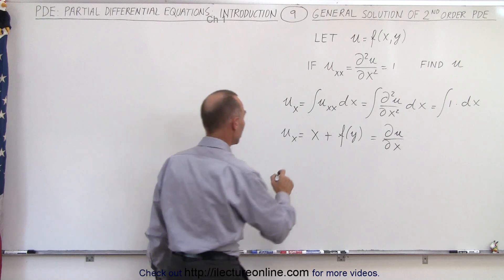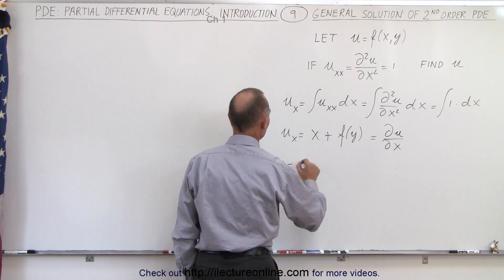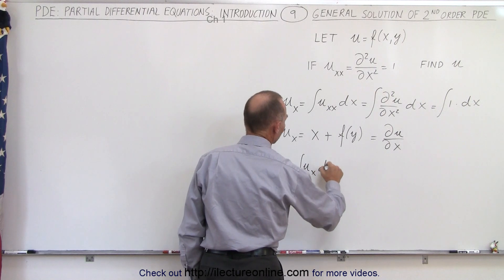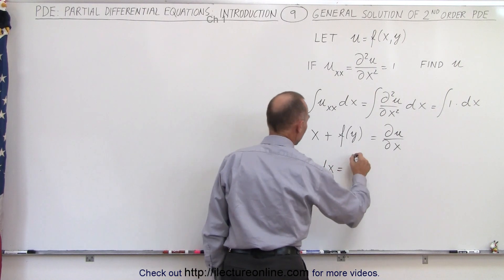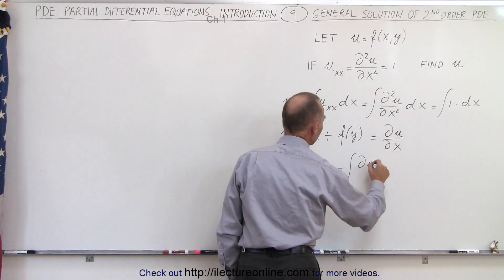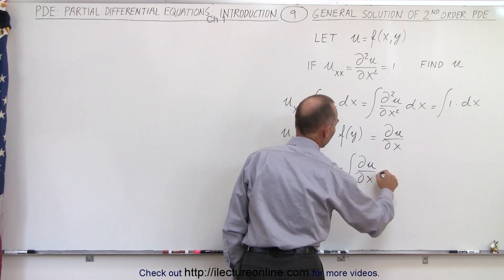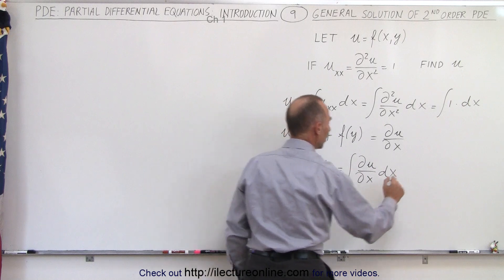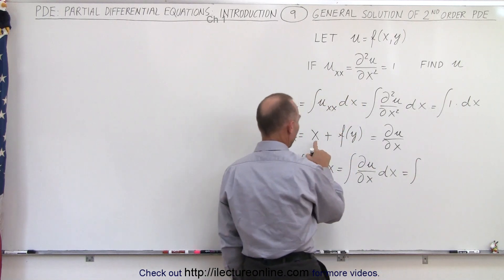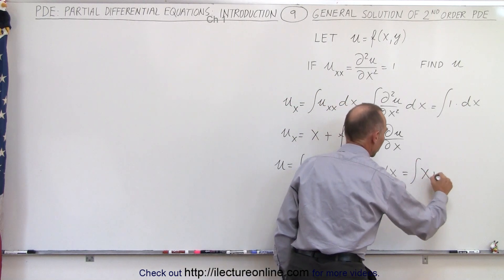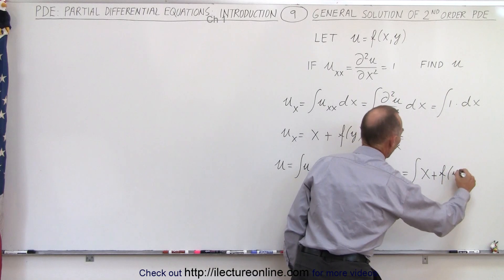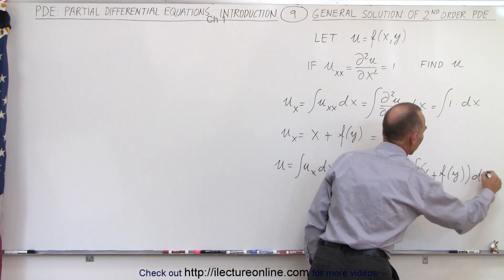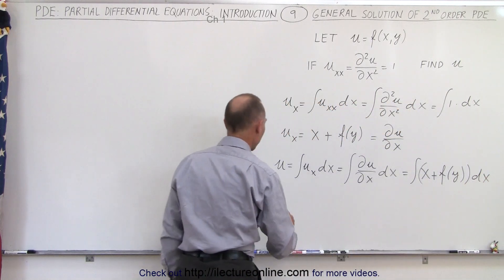Now we have to integrate one more time. u is equal to the integral of u sub x times dx, which is the integral of the partial derivative of u with respect to x dx. The partial of u with respect to x is x plus a function of y, which acts as a constant, so we integrate x plus f(y) times dx.